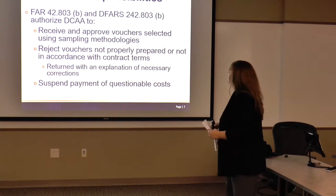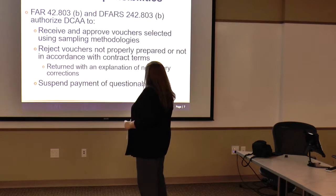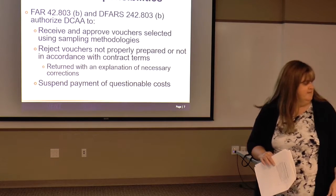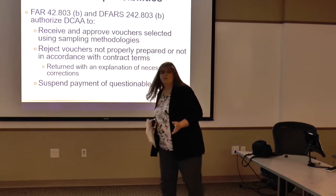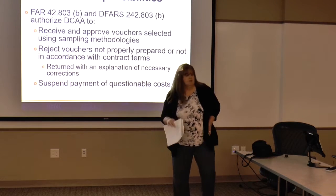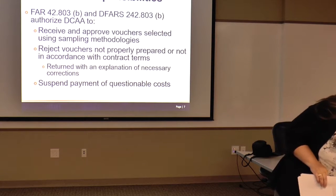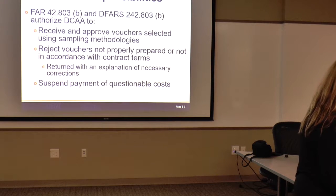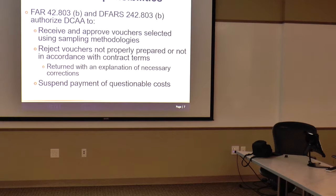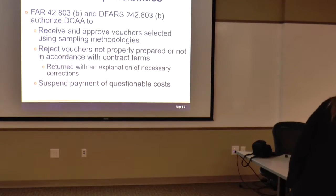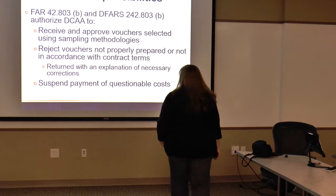What are DCAA's responsibilities? We receive and approve vouchers selected using sampling methodologies. We get a lot of questions about how we pick which vouchers to review. We have some general guidelines depending on the adequacy of your accounting system and the level of risk. We select vouchers two ways: one is a sampling parameter — like every 12th or every 10th voucher depending on how many you submit — and the other criterion is high dollar. By default, the high dollar threshold is your average voucher amount plus 25%.